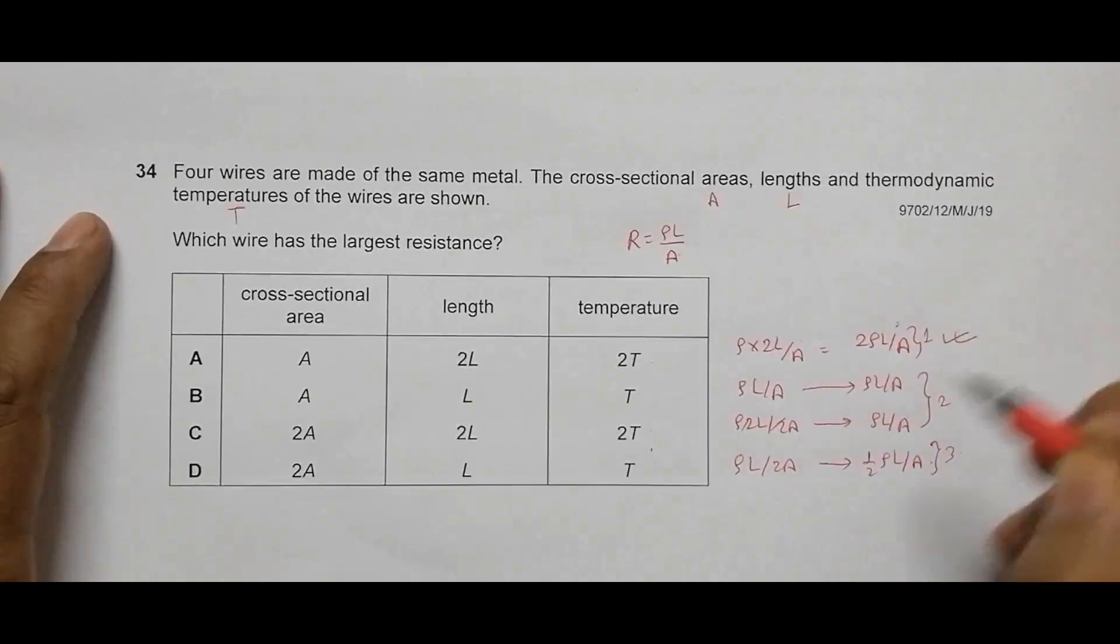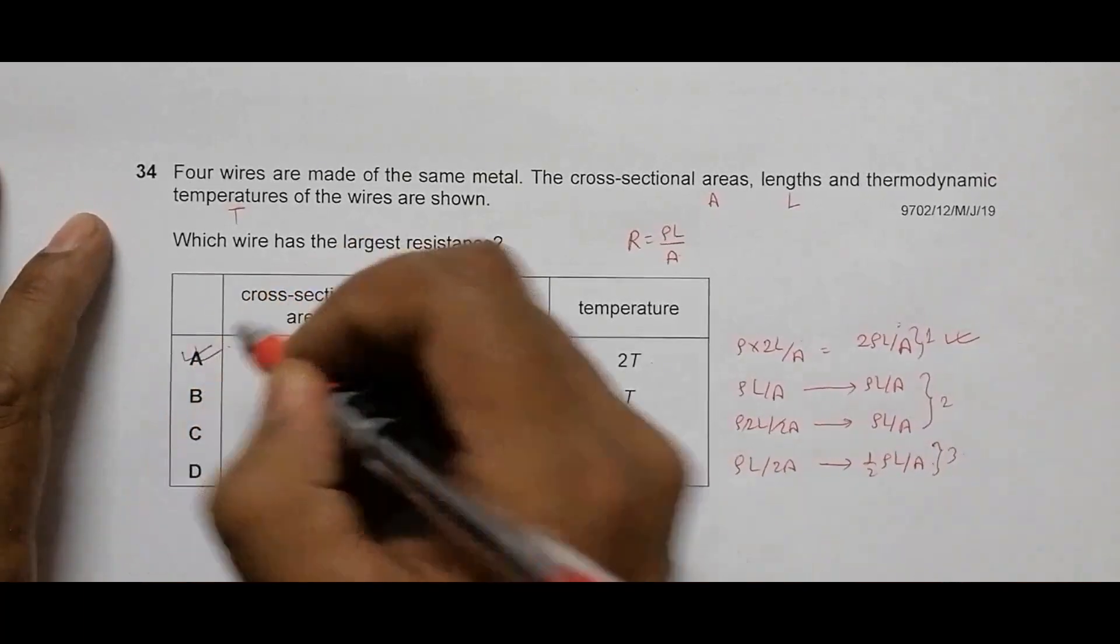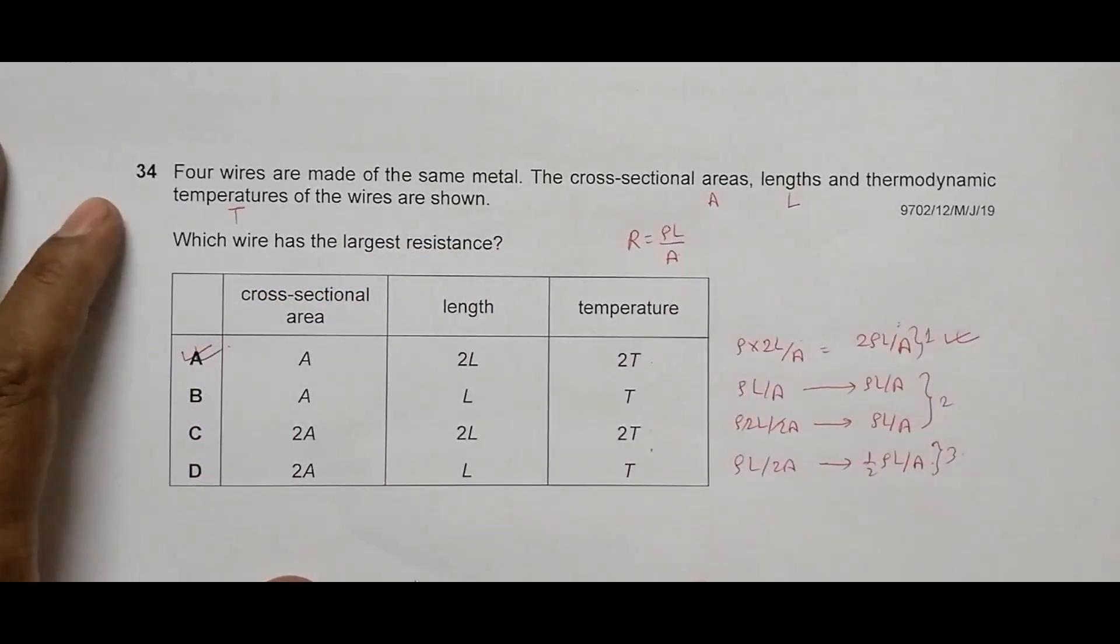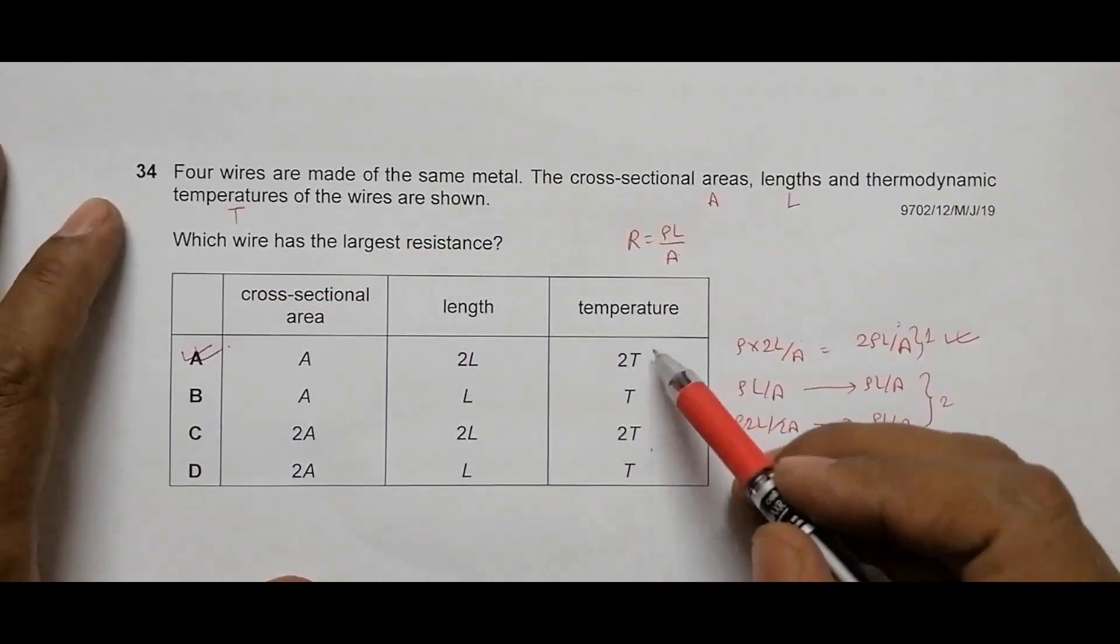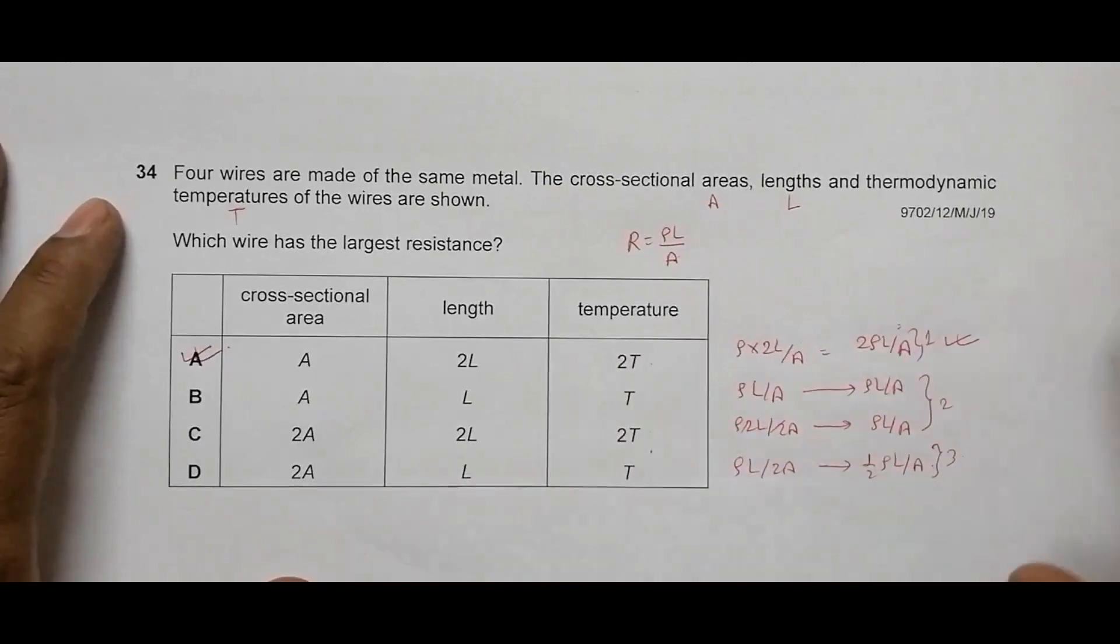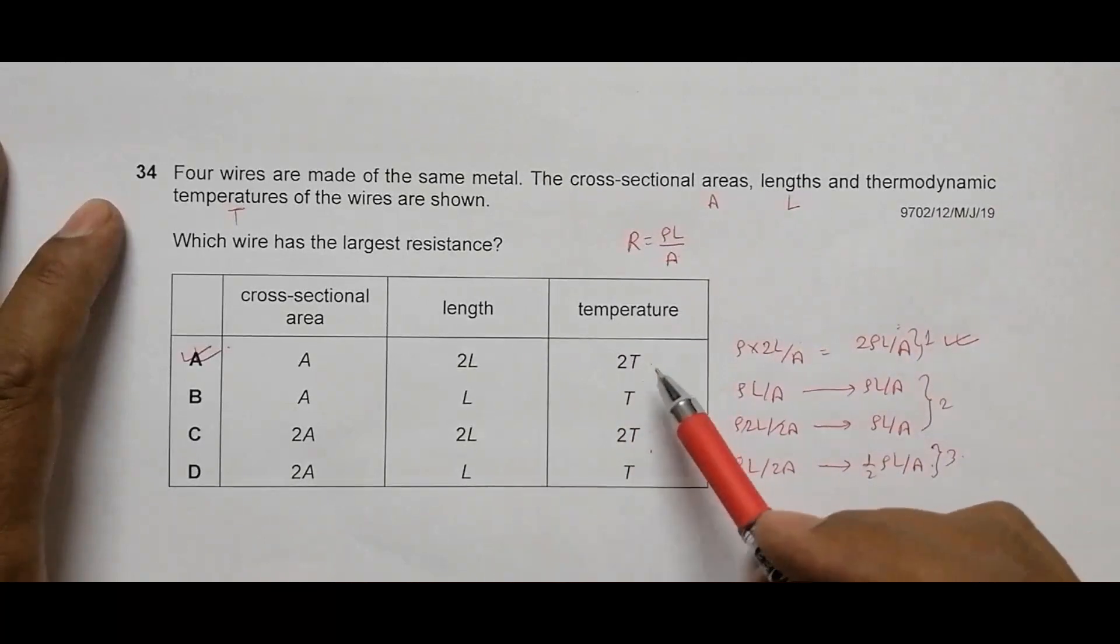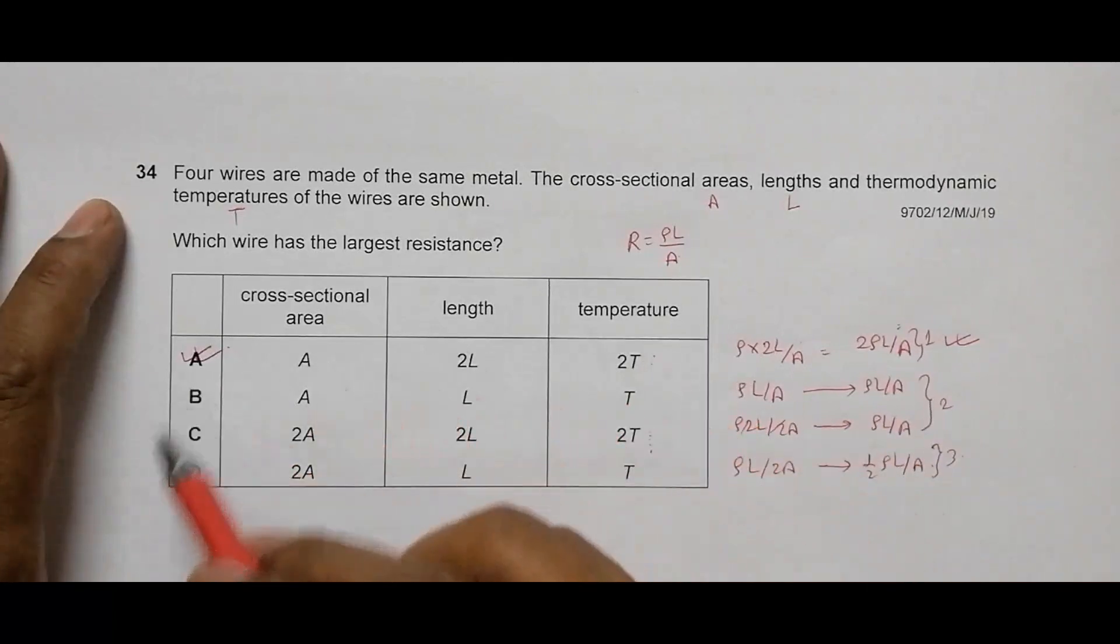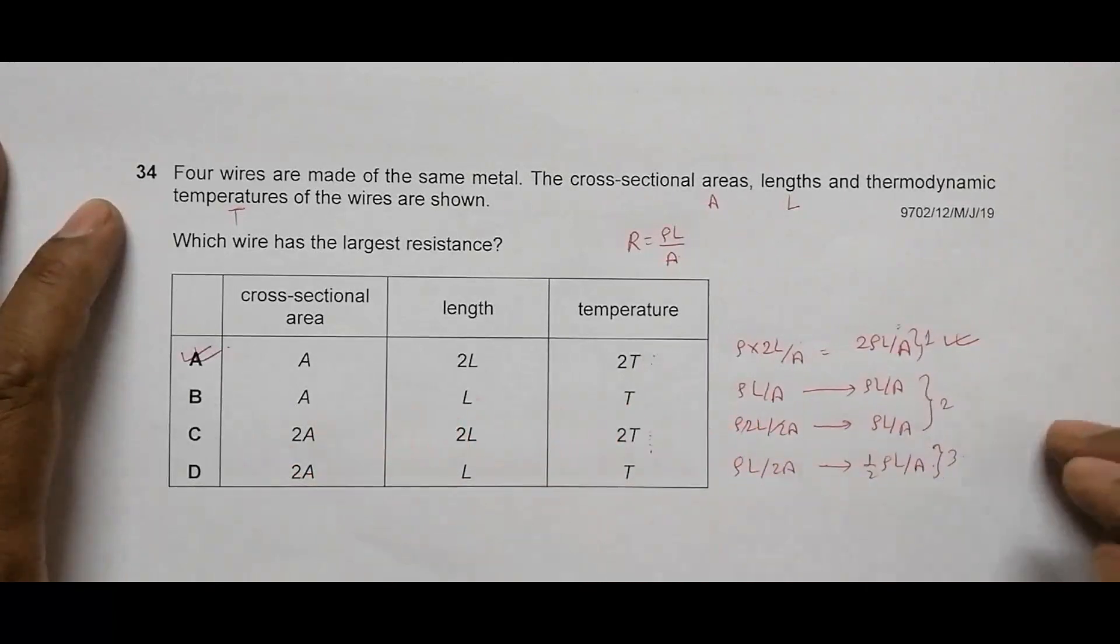One thing that was done in this question was that they tried to introduce this temperature factor so that students get confused, but we don't have to be. Because B and C can have high resistance according to high temperature, but among these two, A has the highest resistance. So A should be the correct choice.